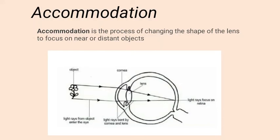Hello friends, welcome to my YouTube channel. Today we're going to discuss accommodation. Accommodation in the eye is the process of changing the shape of the lens to focus on near or distant objects. The lens has to change its shape so that it can focus near and distant objects properly.